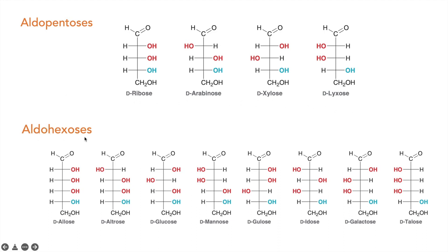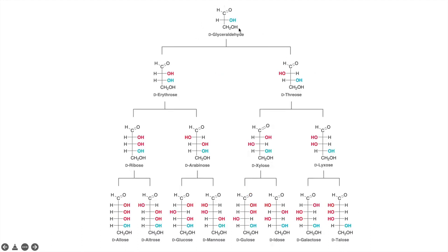For aldohexoses, there are four chiral carbons, so 2⁴ = 16 structures are possible. The eight D-form aldohexoses are D-allose, D-altrose, D-glucose, D-mannose, D-gulose, D-idose, D-galactose, and D-talose. These structures are built systematically from D-glyceraldehyde by adding one carbon at a time — once with the hydroxyl on the same side, and once with the hydroxyl on the other side — repeating this process to generate all possible structures.